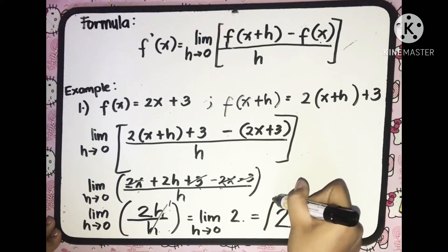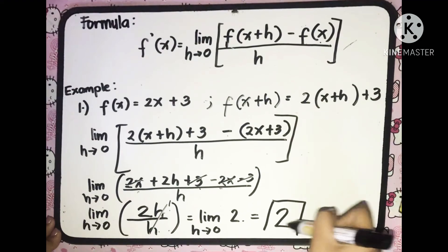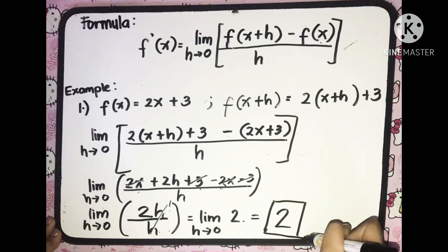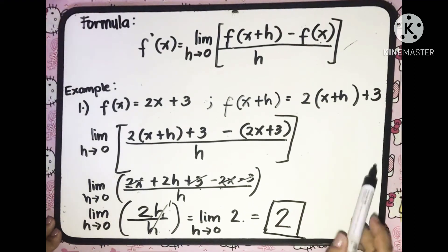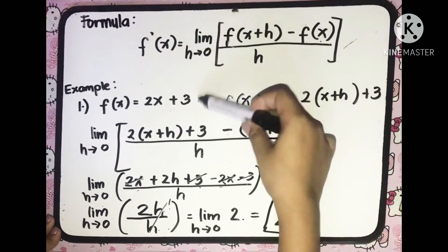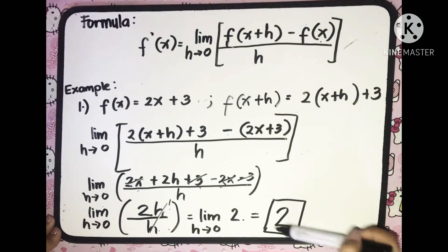Therefore, the derivative of f of x, which is equal to 2x plus 3, is 2.